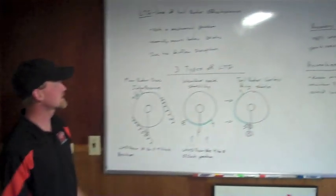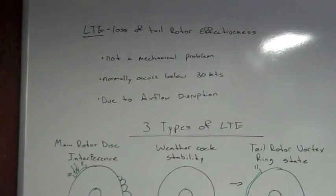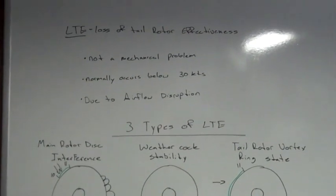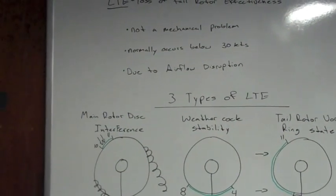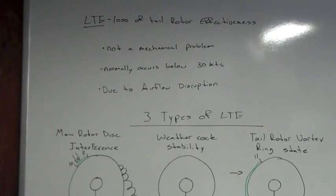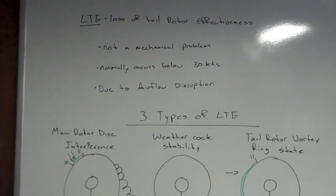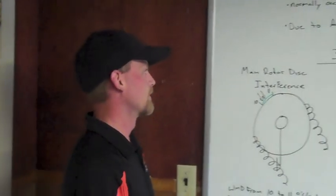LTE, otherwise known as Loss of Tail Rotor Effectiveness, is a problem that all helicopters with tail rotors will experience. It is not a mechanical problem, however. This normally occurs below 30 knots and it's due to the airflow entering the tail rotor disturbed or in a chopped up manner.